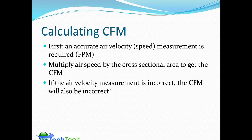In calculating CFM, you first need an accurate air velocity measurement, usually in feet per minute. You multiply that velocity by the cross-sectional area to get cubic feet per minute. An important point: if the air velocity measurement is incorrect, the CFM is also going to be incorrect — there's no way to correct it with another calculation. It's only as good as the air velocity measurement you're making.